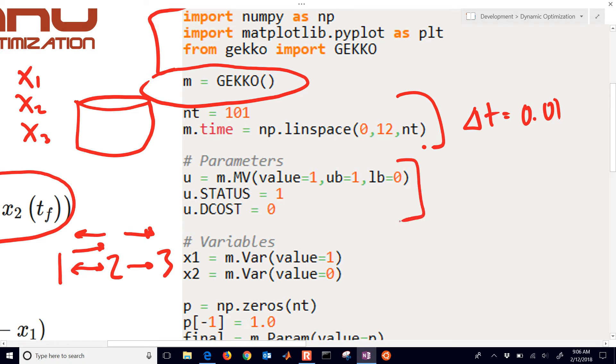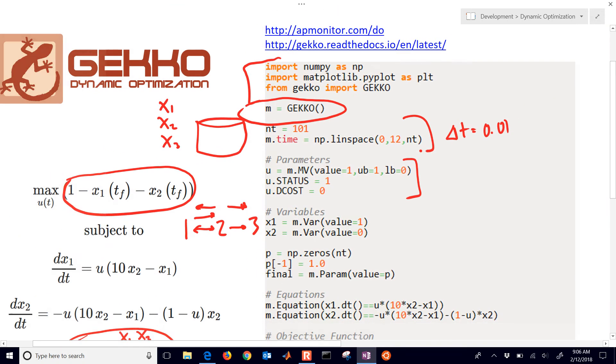I've set up my manipulated variable. That's my u value. And I have an upper bound of 1, a lower bound of 0. And I just gave it an initial guess of 1. You can put an initial value of whatever you'd like. This tells to turn on that parameter to be able to be optimized. And then also I put the d-cost, the delta cost, for moving that parameter to 0. By default, I believe it's like 1 times 10 to the minus 5th. So it shouldn't affect it that much, but just eliminate that.